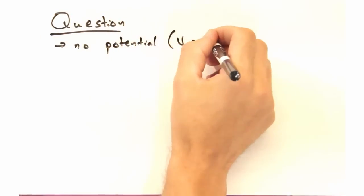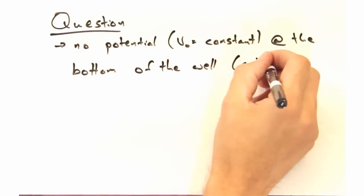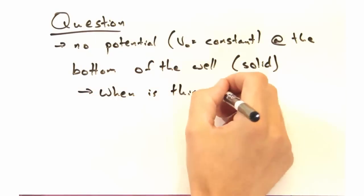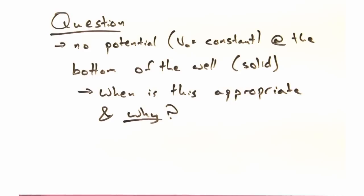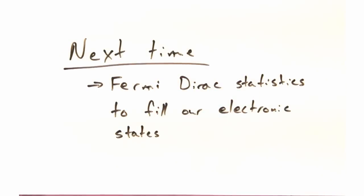Here's a question to think about for today. This model has no potential at the bottom, which seems like a ridiculous oversimplification. When do you think this is going to be appropriate? So thanks for watching today's solid state physics in a nutshell. Next time we'll take a look at Fermi-Dirac statistics as a way to fill our electronic states. See you then!